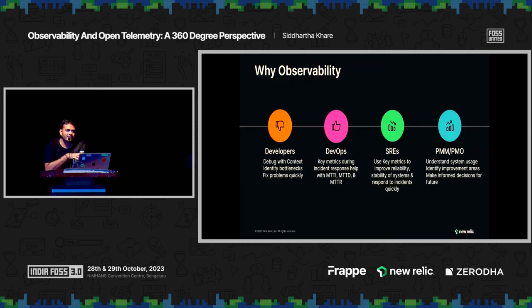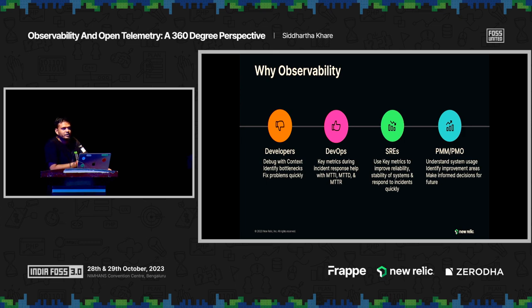Observability is helping each and every persona in your organization. Developers can figure out fixes in their code and debug more efficiently. DevOps engineers can understand how their system health is depending upon the metrics which observability is generating for them. SREs will understand how reliable their systems are. And it also helps your product managers and product owners to understand how their end users are leveraging their applications, so they can make more informed decisions while planning new features.